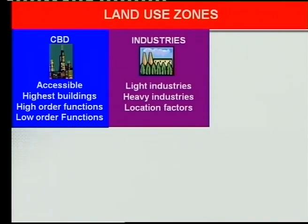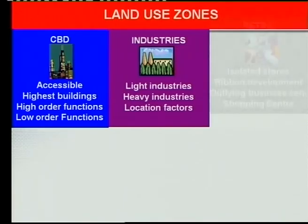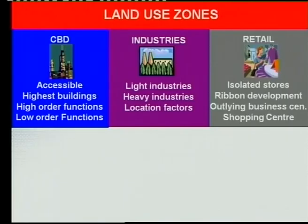Then, the industries. What is it? Industries. Where do we get them? Light industries close to the CBD, heavy industries far from them. What do they look like? You must know about the pollution and all these types of things. Then retail — the four types of retail that are decentralized: isolated stores, ribbon development, outlying business center, and shopping centers. See that you know these names, see that you know where you find each of them, and see that you know what every one of these things looks like.